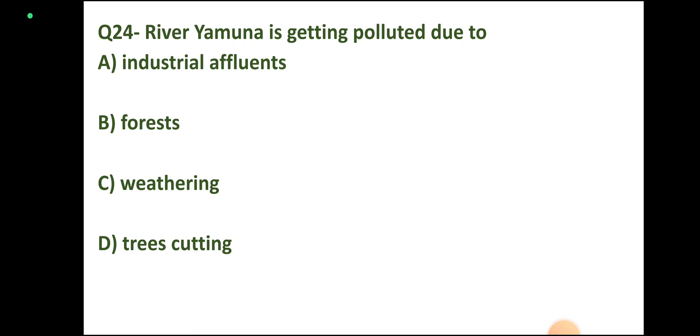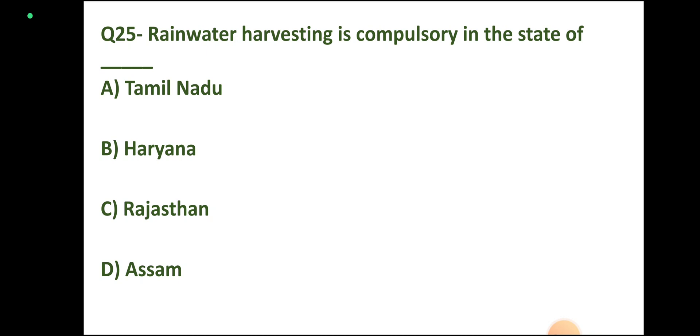Question number 24: River Yamuna is getting polluted due to industrial effluents, forest, weathering, or trees cutting. Correct answer: industrial effluents, option A.